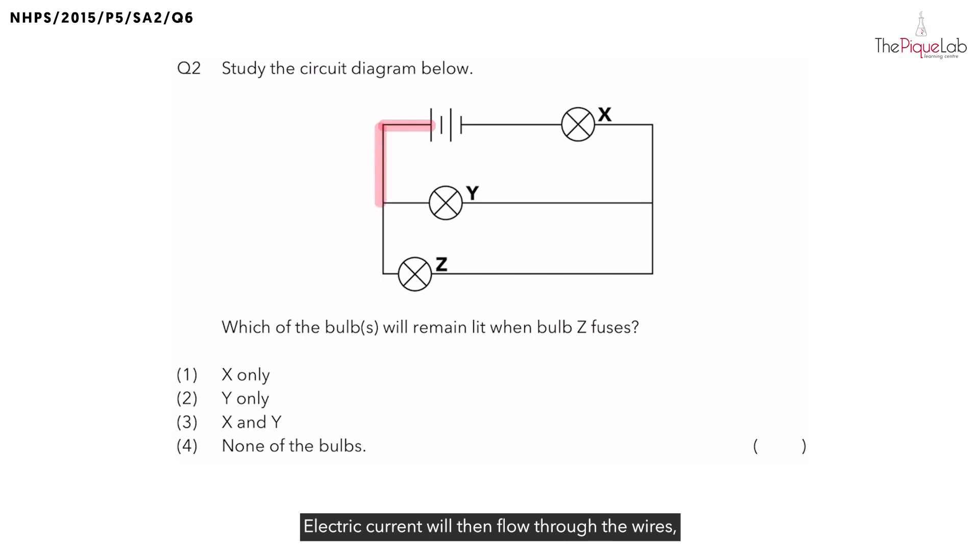Let's take a highlighter and trace from this terminal of the battery over here. Electric current will then flow through the wires, through bulb Y. And at this point, where should electric current flow? Should electric current go up or should electric current go down?